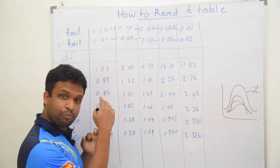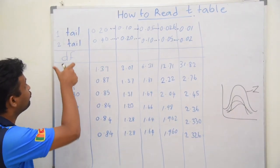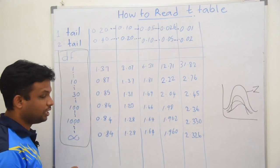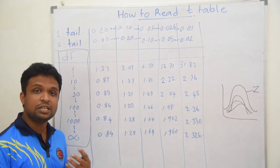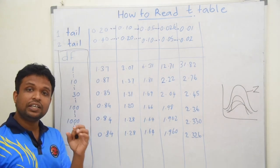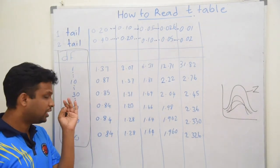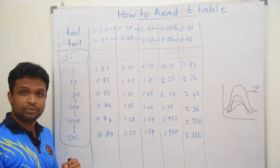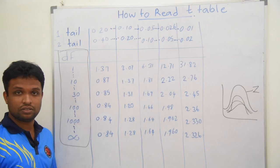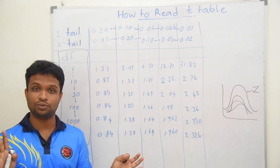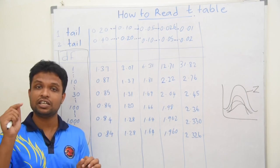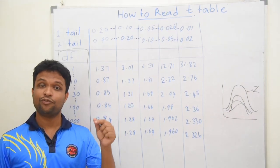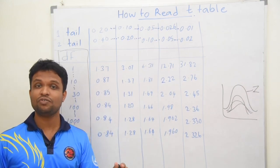In the T-table, the first column contains something called degrees of freedom. Degrees of freedom means the number of free observations or independent observations. This is related to your sample size. If you have 100 individuals in one sample, 99 of them are independent observations, because if you know the mean of 100 individuals and the value of 99 of them, you can easily predict the last one. So the final one is not an independent observation — that is why we call it degrees of freedom.